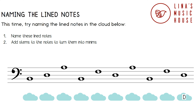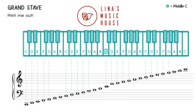You have just learned how to name the line notes for the bass stave. When we combine the treble and bass staves together, the grand stave is formed. A short line known as a ledger line is used between them for middle C. The treble and bass staves are joined together by a brace or bracket.